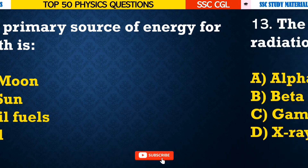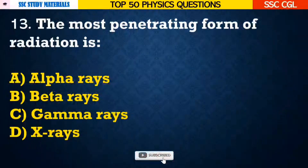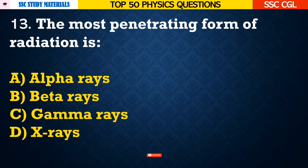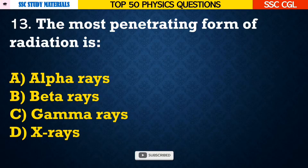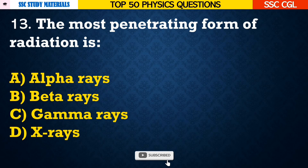Question number 13: The most penetrating form of radiation is — Answer C. Gamma rays.